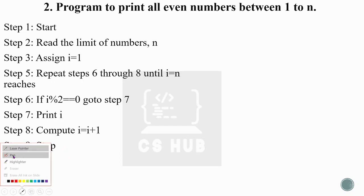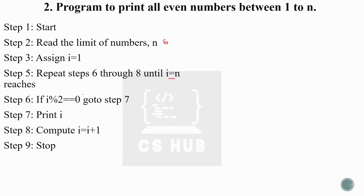Let me give an example. Assign limit as 6, assign i equal to 1. Check: 1 is not equal to 6. Then 1 percentage 2 — remainder is 1, not 0, so we skip printing. Increment i to 2. Check: 2 percentage 2 equals 0 — correct, so we print 2. Increment i to 3. Check 3 percentage 2 — remainder is not 0, so we increment again.